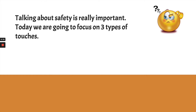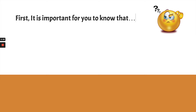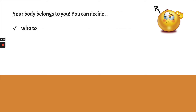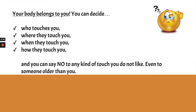Talking about safety is really, really important. Today we're going to focus on three types of touches you might experience. But before that, I want to remind you that your body belongs to you and you get to decide: number one, who touches you; number two, where they touch you; number three, when they touch you; and number four, how they touch you. You can say no to any kind of touch that you do not like, even to someone older than you.